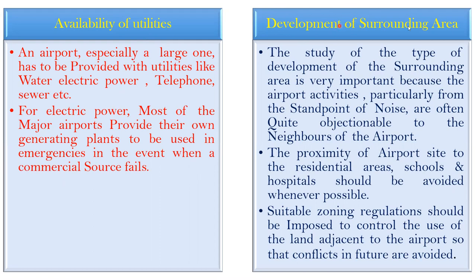The development of the surrounding area is very important because airport activities, particularly noise, are often objectionable to neighbors. The proximity of the airport site to residential areas, schools, and hospitals should be avoided whenever possible. A suitable zoning regulation should be imposed to control the use of land adjacent to the airport, so that conflicts in the future are avoided.